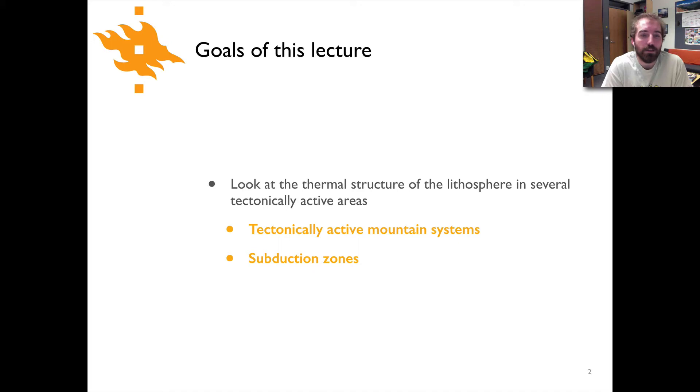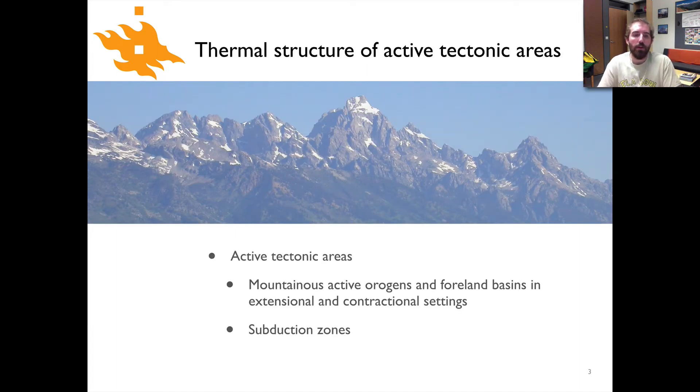We're going to look at basically two different examples: tectonically active mountain systems or active orogens, and then we'll look at the case of the thermal structure in subduction zones. We have all the pieces now to look at the rather complicated thermal structure in these two settings. This is just a nice photo of the mountainous topography of the Teton range in the western United States.